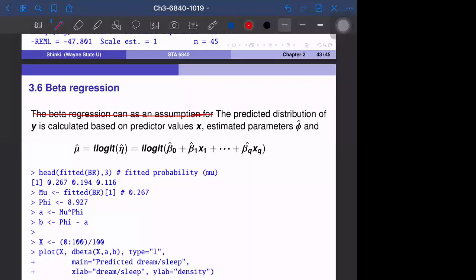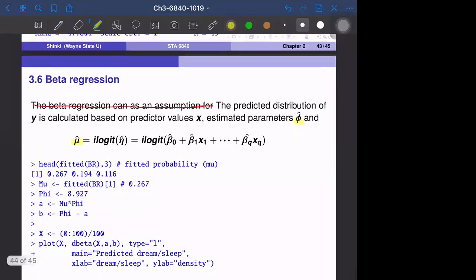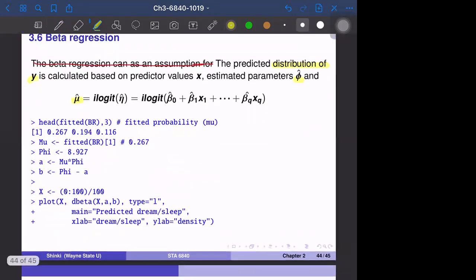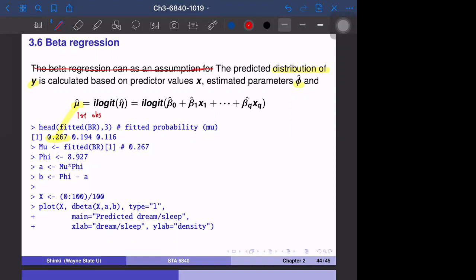The predicted distribution of y is calculated based on predictor values x and estimated parameters φ̂ and μ̂. In the previous slide, we saw that φ̂ and μ̂ are available - μ̂ is available for each observation. If these are given, we can calculate the distribution of y. So first, the fitted value - this is μ̂. For the first observation, μ̂ is 0.267, and φ is uniformly 8.927 for all observations. To get the beta distribution, we have to describe it with parameters a and b. So φ is a plus b, and μ is a over a plus b. So a is μ times φ, and a plus b is φ, so b is φ minus a. Now we can get parameters a and b.